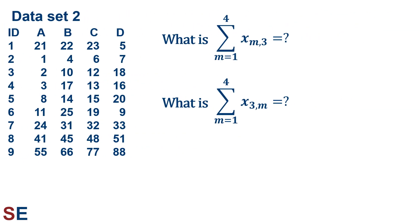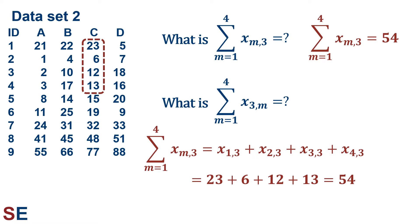Now for two summations using the dummy variable m instead of i or j — the letter used is totally arbitrary. For the first sum, m goes from 1 to 4 of x_{m,3}: m represents the row. The first subscript changes 1, 2, 3, 4, giving x_{1,3}+x_{2,3}+x_{3,3}+x_{4,3} — the row changes 1 to 4 in the third column, shown by the dashed rectangle. Those values are 23+6+12+13 = 54.